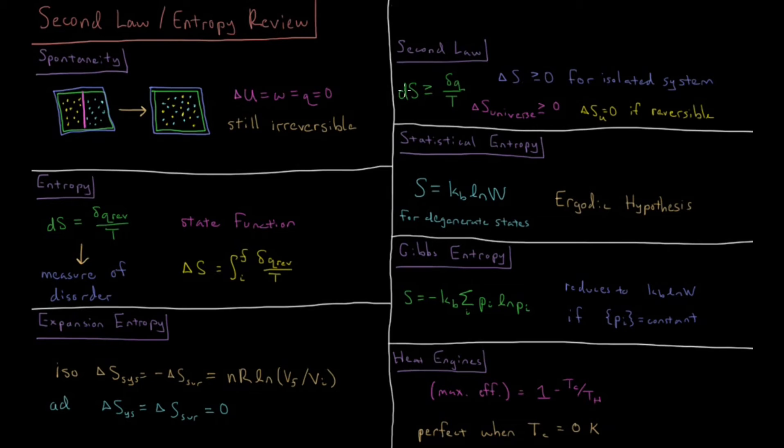You can also define entropy by the Clausius inequality where entropy is greater than or equal to the heat divided by the temperature for a given process. We notice that this equals here was the case where it is reversible and greater than as we said when it is irreversible.